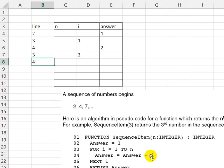Now, if i is 2, 2 plus the value of answer, which is currently 2, will be stored in answer. So answer will become 4.